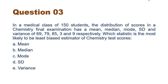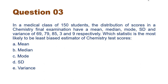Next question: in a medical class of 150 students, the distribution of scores in a chemistry final exam has a mean, median, mode, SD, and variance of 69, 79, 85, 3, and 9 respectively. Which statistic is most likely to be the least biased estimator of the chemistry test score? Here we are talking about measures of central tendency; standard deviation and variance are measures of dispersion, so they are not correct.